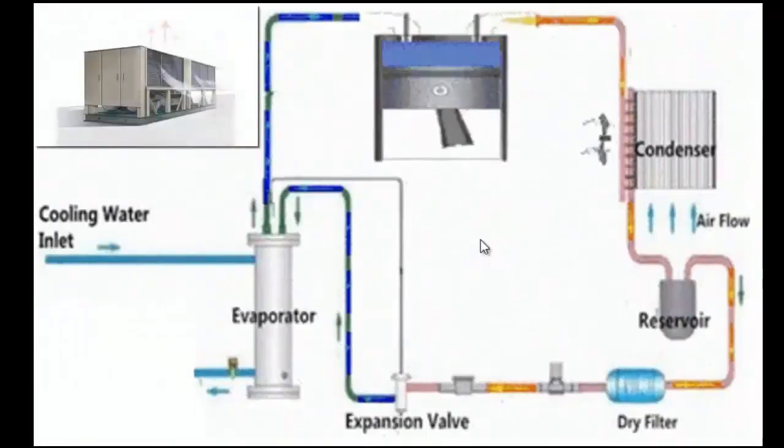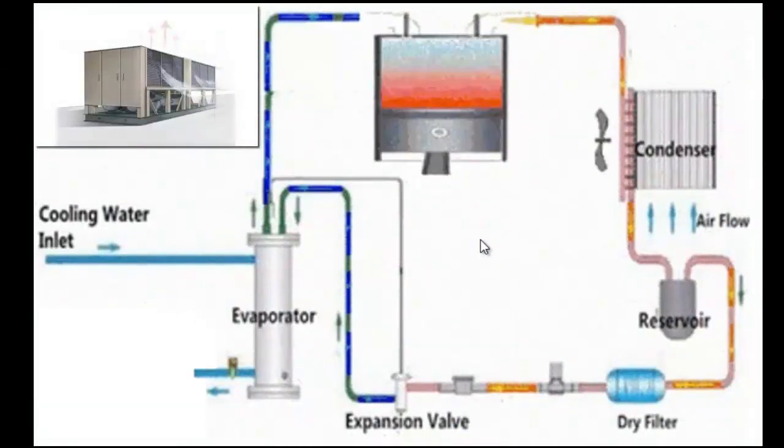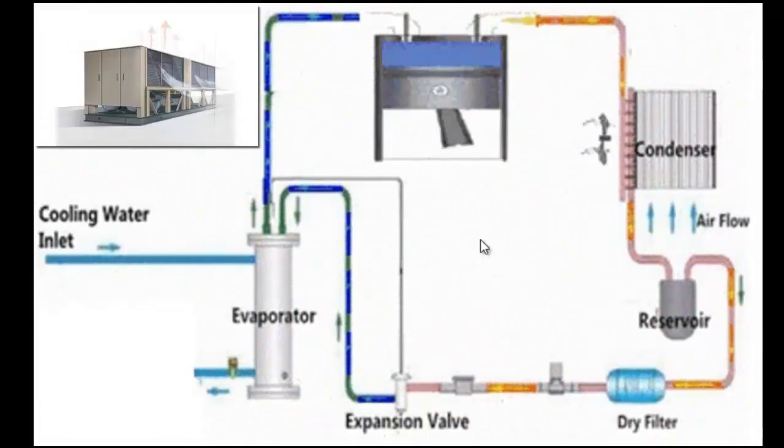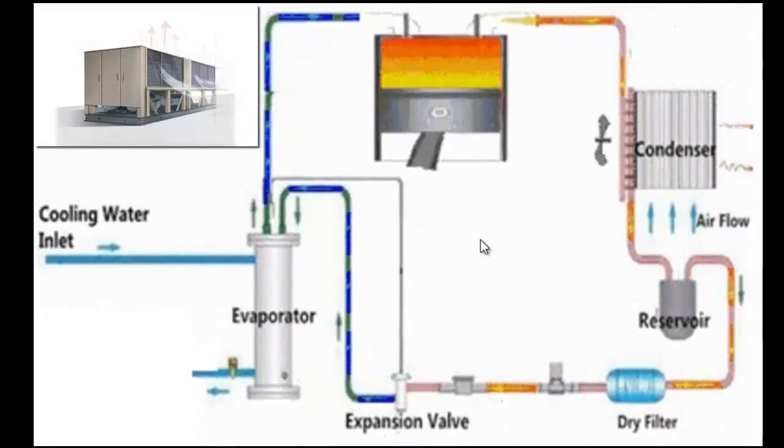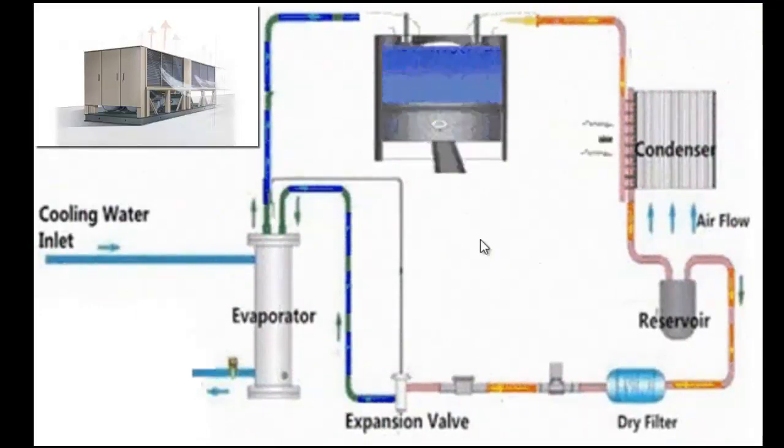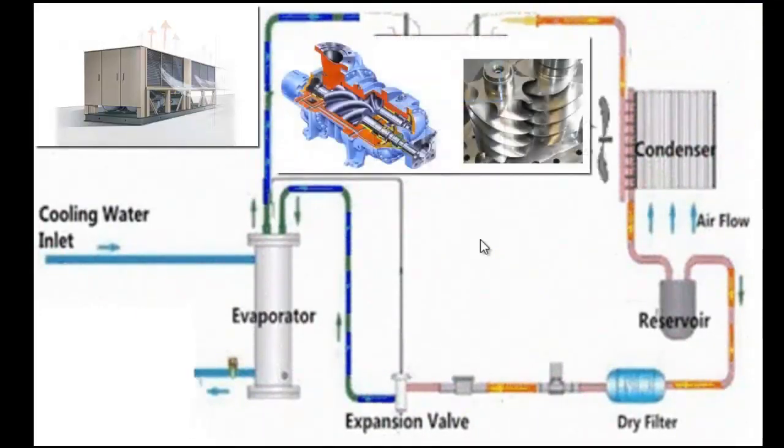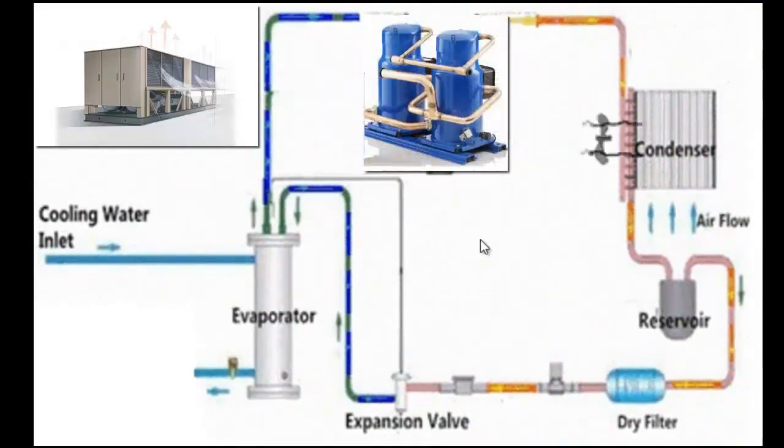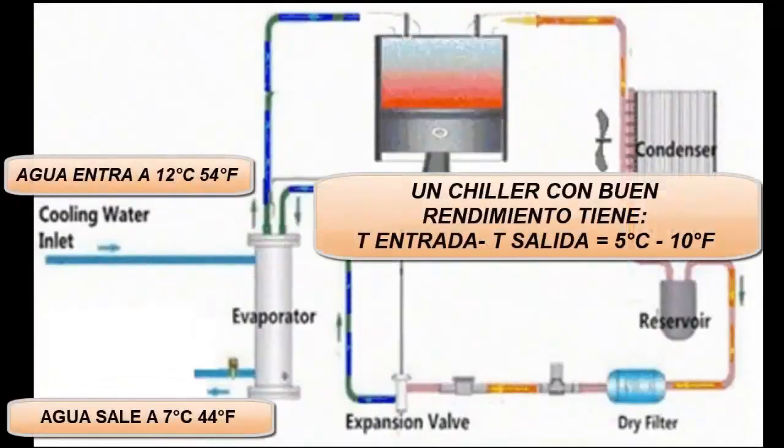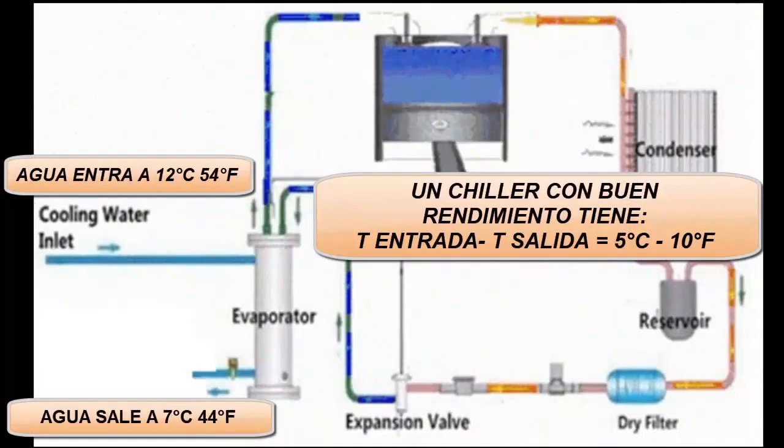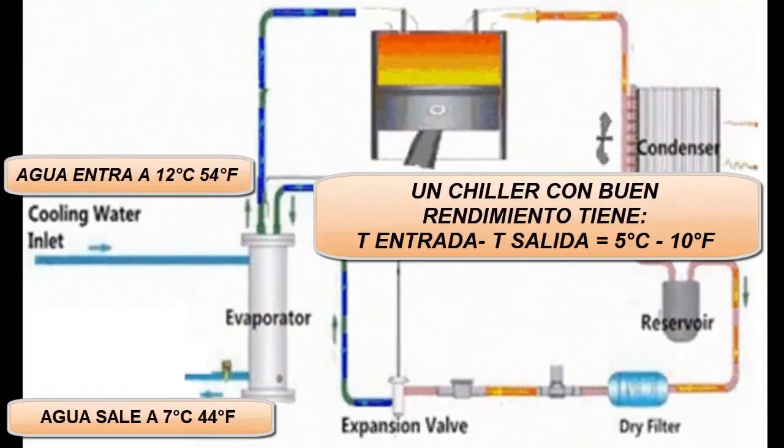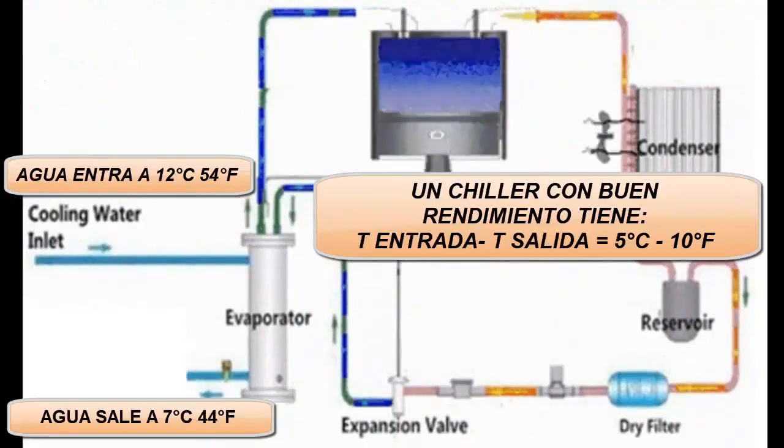Internally this chiller is basically how we are showing in the animation. Although of course it has a greater number of accessories to improve its control. We can see that it is very similar to an air conditioner inside. This type of chiller usually has a screw type compressor or several scroll type compressors. The water enters the evaporator to be cooled. This temperature differential indicates the performance of the chiller.